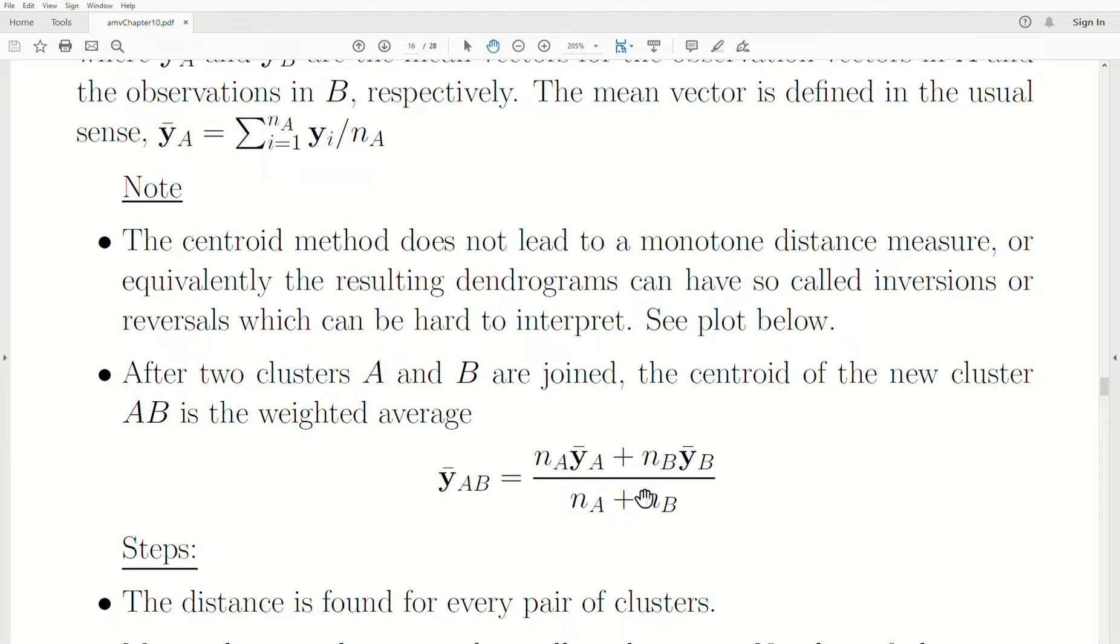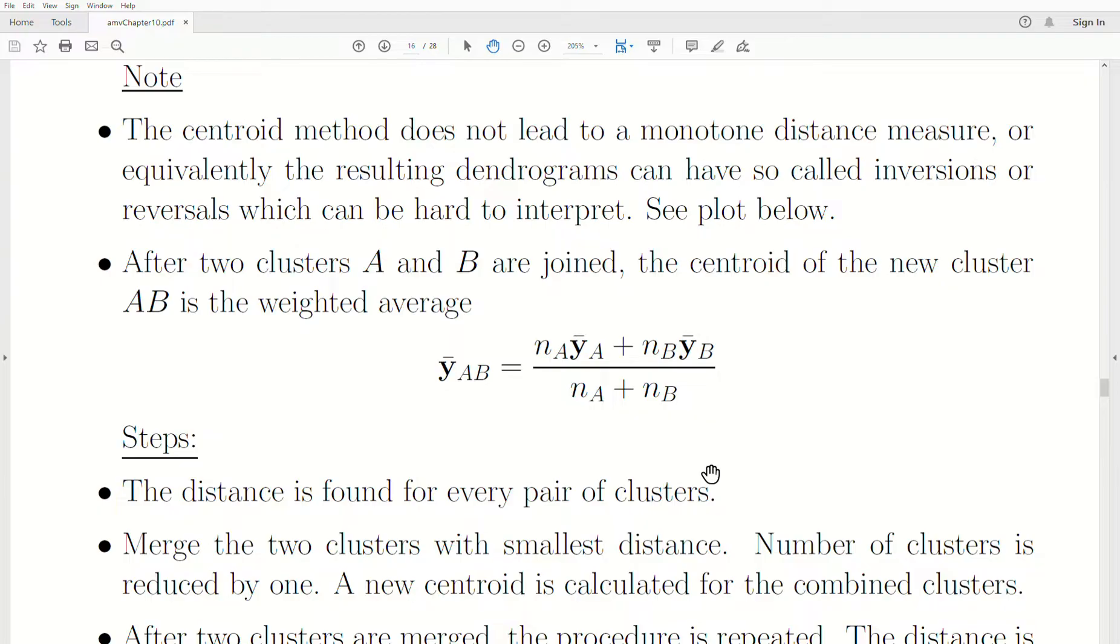But another note: after two clusters A and B are joined, the centroid of the new cluster called AB is the weighted average between those two previous centroids. So this is a new centroid and it's a weighted average. So one knock against this is that if you have a really big cluster and then you're merging it with an observation or a small cluster, then the new centroid is weighted or moved towards the cluster with larger observations. And I'm pointing this out now because when we go to what's called the median linkage method, it looks at this aspect.